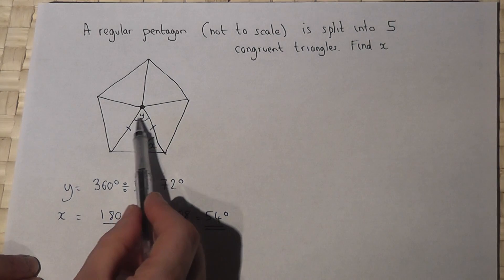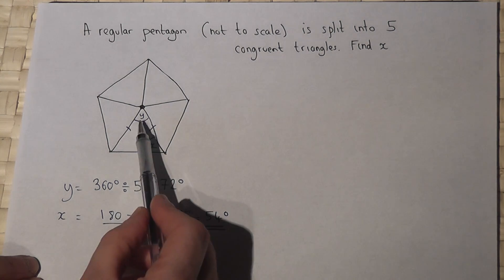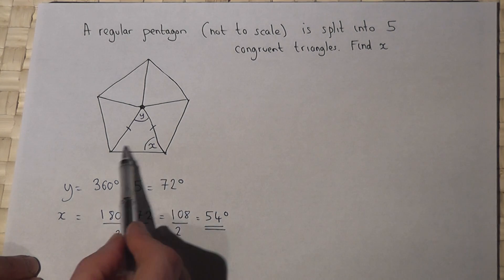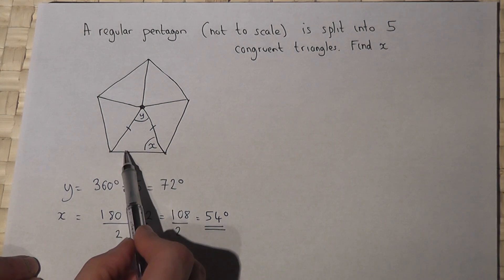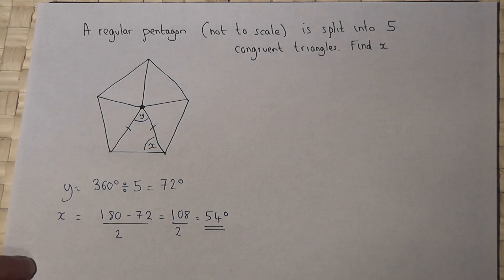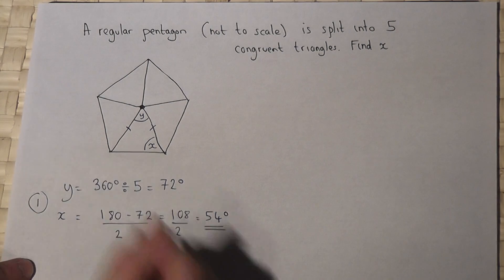So again, Y is 72, we do 180 take away 72 to get the leftover angles and then divide by 2 because there were two of them. Here X is 54. So that's option one.